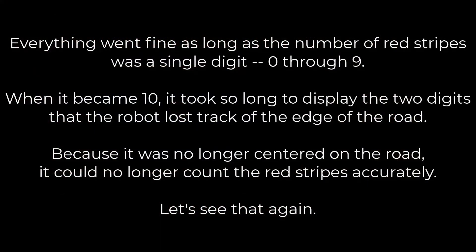Everything went fine as long as the number of red stripes was a single digit, 0 through 9. When it became 10, it took so long to display the two digits that the robot lost track of the edge of the road. Because it was no longer centered on the road, it could no longer count the red stripes accurately.